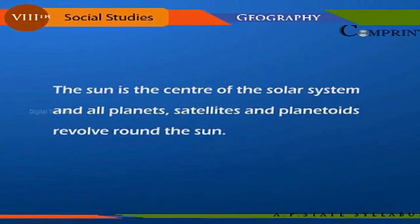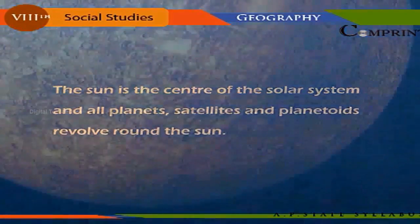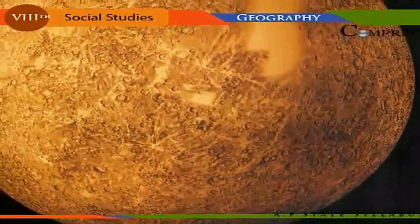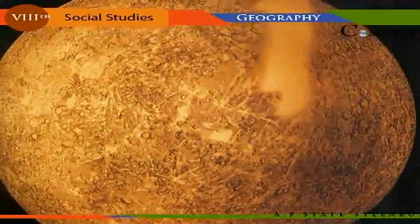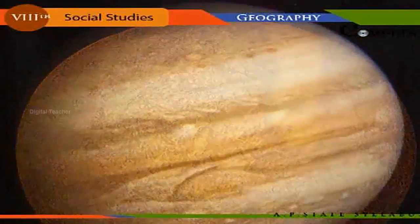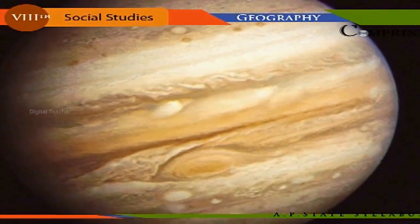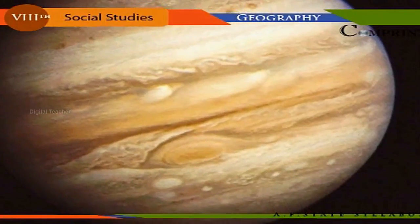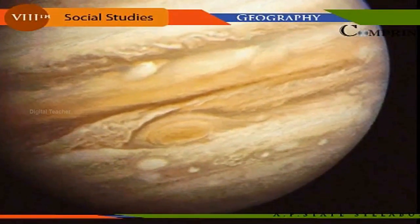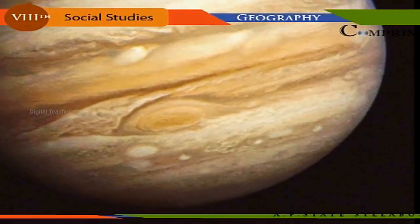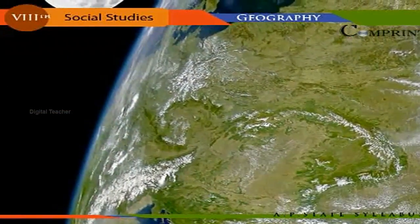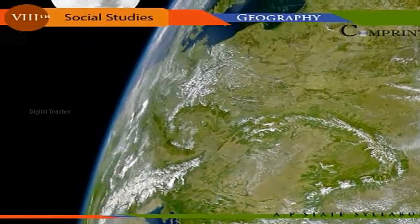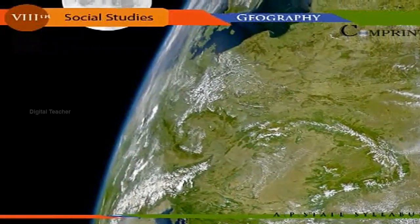The Sun is at the center of the solar system, and all planets, satellites, and planetoids revolve around the Sun. Among the nine planets, Mercury is the nearest planet to the Sun. Next in order are Venus, Earth, Mars, Jupiter, Saturn, Uranus, Neptune, and Pluto.